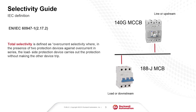As per IEC, Total Selectivity is defined as Overcurrent Selectivity where, in the presence of two protection devices against overcurrent in series, the load side protection device carries out the protection without making the upstream device trip.